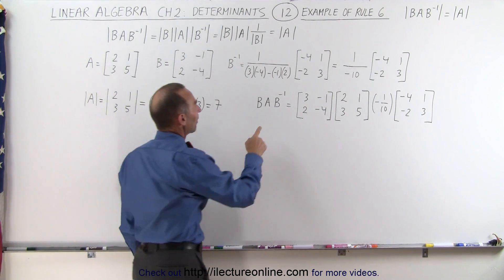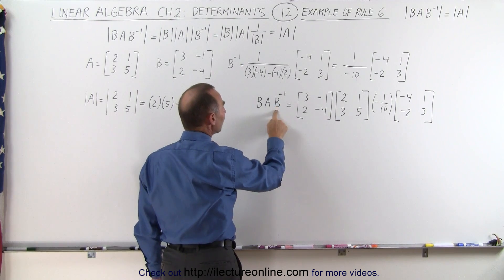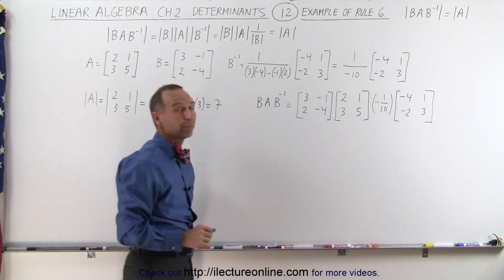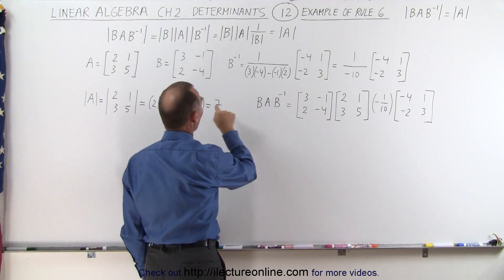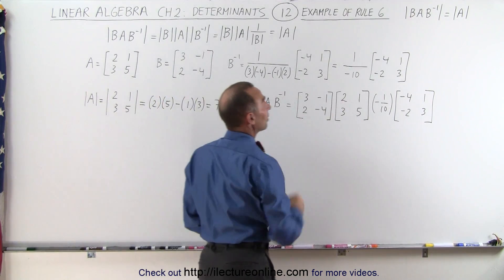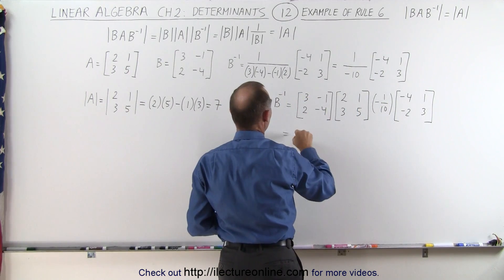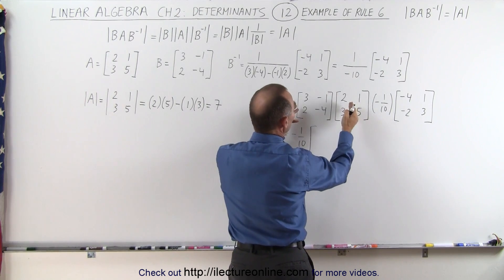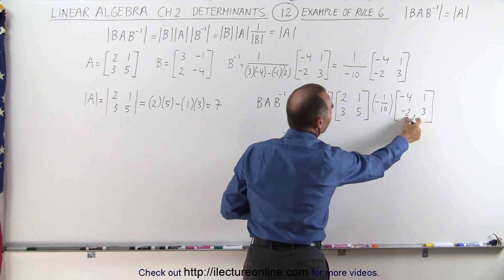Then when we try to find matrix B times matrix A times the inverse of matrix B, it's simply the product of these three matrices. What we're going to do is show that if we take the determinant of this we should also get 7, but before we can do that let's multiply these out. This constant comes out to the front, so this can be written as minus 1 over 10 times the product of these two — we'll multiply these two first and then take that result times this matrix.